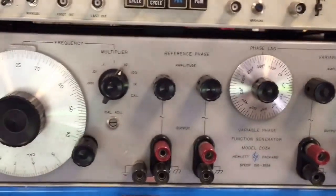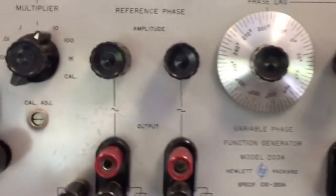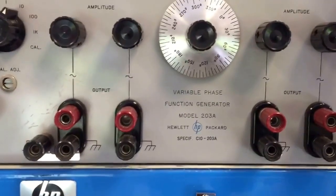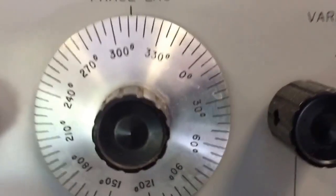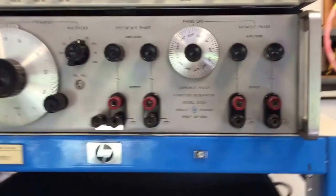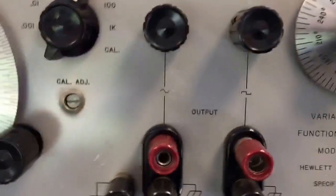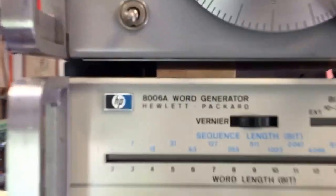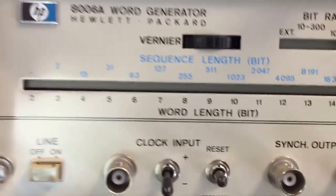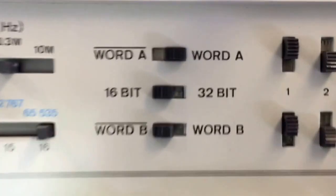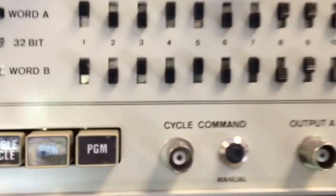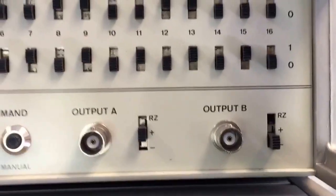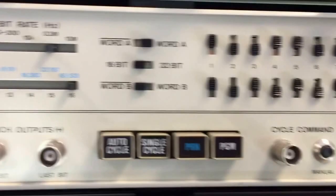This one here is a variable phase, HP 203A variable phase. It has two outputs and variable phasing right there. Also does both square wave and sine wave. Then this is the 8006A word generator, which is a pulse generator that you can set a 16 or 32 bit word train of pulses with the positions of all these switches, and send a pulse train of one word at a time.